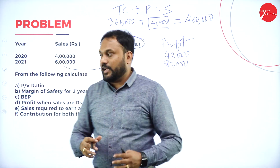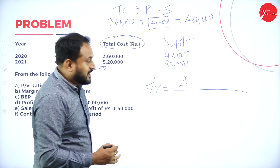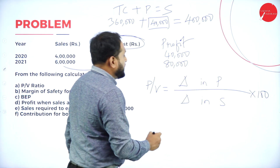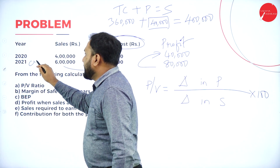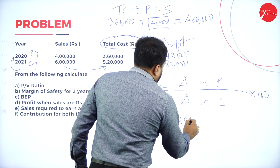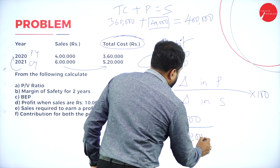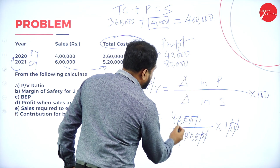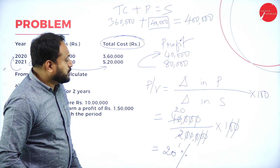When two years' data is given, PV ratio = Change in Profit / Change in Sales × 100. Current year (2021) minus previous year (2020): Change in Profit = 80,000 − 40,000 = ₹40,000. Change in Sales = 6,00,000 − 4,00,000 = ₹2,00,000. PV = 40,000 / 2,00,000 × 100 = 20%.